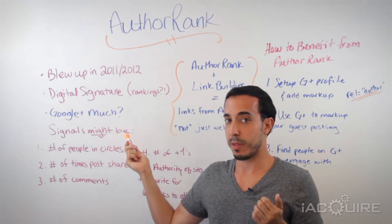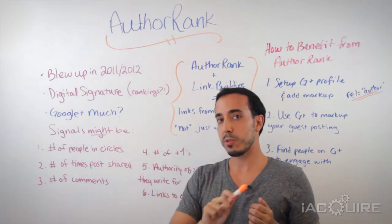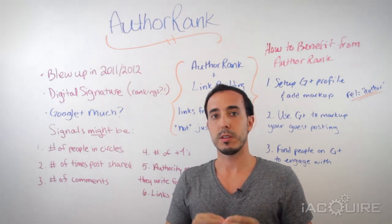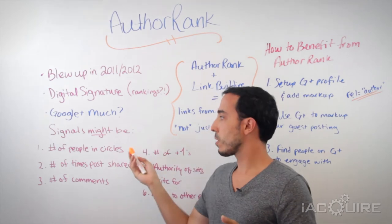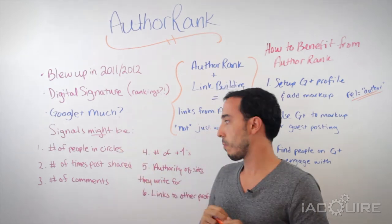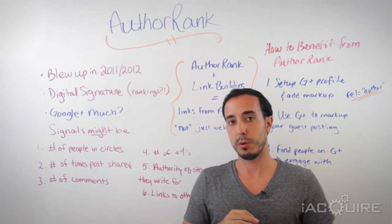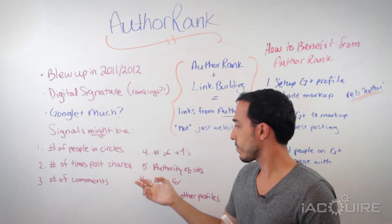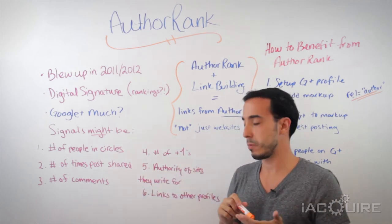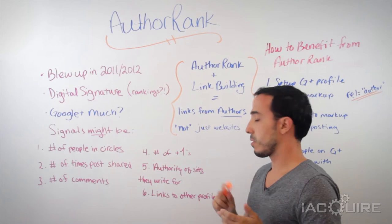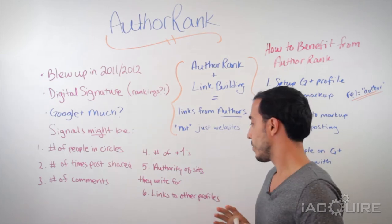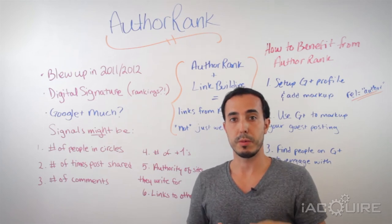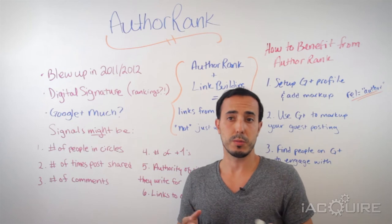And that it might feed into filtering rankings somehow. Sound like Google Plus a little bit? So, what are signals that Google might be able to look at when looking at an author's Google Plus profile? Well, they might want to look at the number of people in their circles, the number of times a post has been shared, the number of comments a post has gotten, maybe the number of plus ones, or potentially the authority of the websites they're posting content to. And maybe even links they have to other profiles — linking to their LinkedIn profile or their Twitter profile.